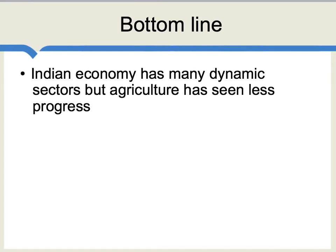There are many particular problems with agricultural productivity in India, and we've looked at only a few. The Indian economy really does have many dynamic sectors, but agriculture has seen much less progress. We know from development economics more generally that if you're looking for a sector to have productivity gains in a way that will reduce poverty and extreme poverty in your country, agriculture is really the place you would want those productivity gains to come. So the difficulties with agricultural productivity in India have been a very significant contributor to problems of poverty in that country.